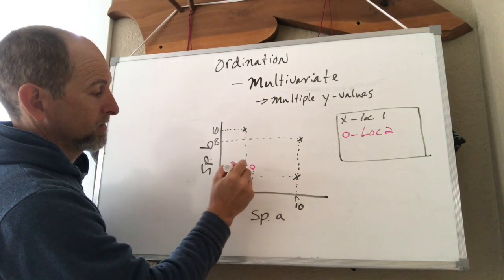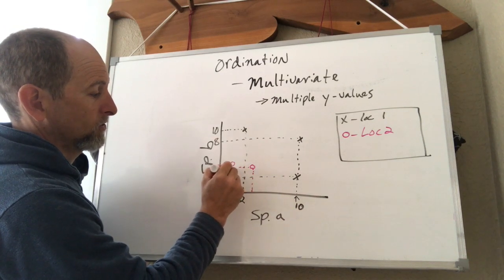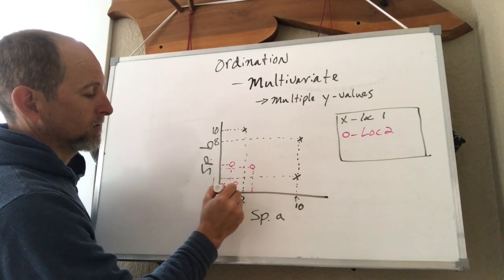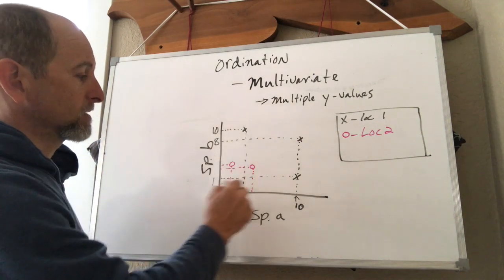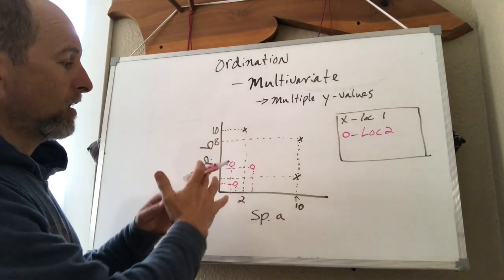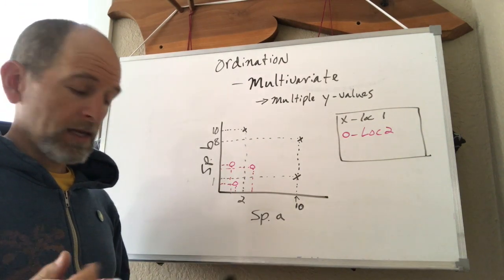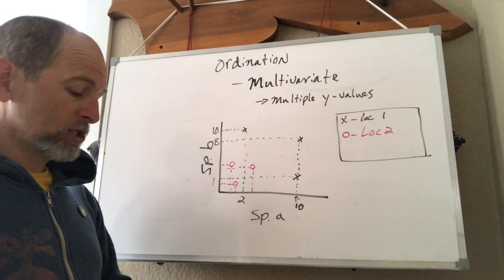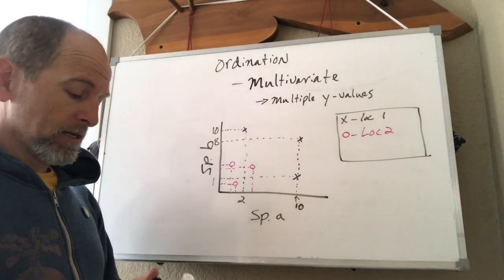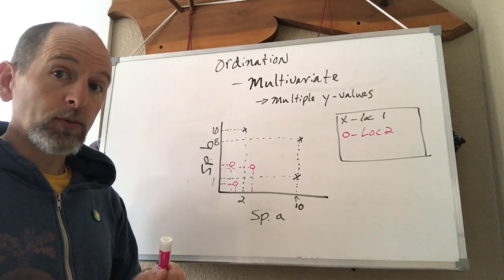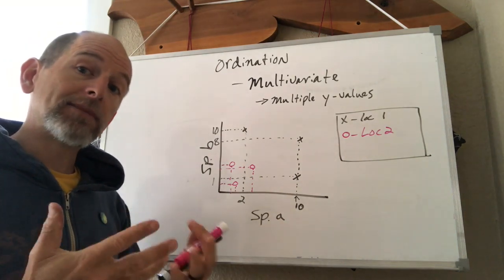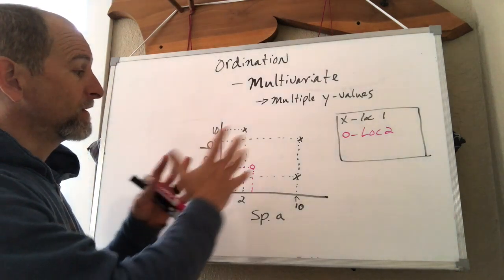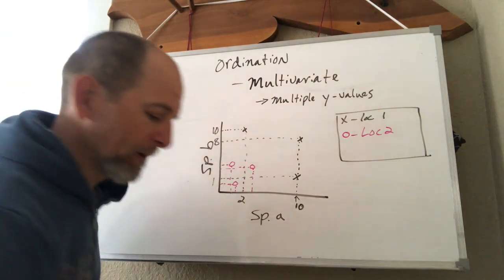In this case, it turns out to be a relatively simple thing to look at. Because in all cases, location two has smaller amounts of species A and species B. And so we can say it's different in both species A and species B. Both of these sites have both of these two species. So they have the same species richness, if there were only these two species. But they have different amounts, different relative amounts.